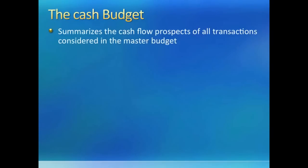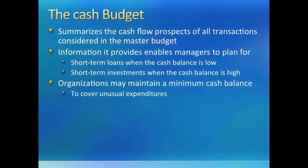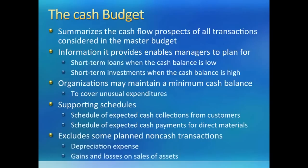A cash budget includes all cash transactions of the company. It helps companies plan for additional cash in periods of shortage as well as for short-term investments in periods of excess. Just like inventory, companies may have a policy of keeping minimum cash to cover unforeseen expenses. To make a cash budget, we will first need to figure out the pattern in which the company's customers pay and the pattern in which the company pays its suppliers. Cash budget excludes all non-cash transactions such as depreciation and gains and losses on sales of assets.